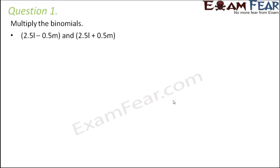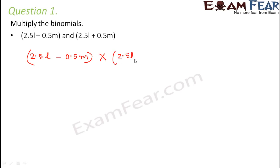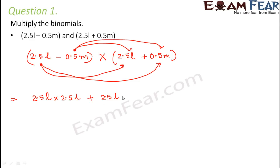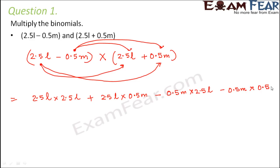Question number 1: Multiply the binomials 2.5L minus 0.5M and 2.5L plus 0.5M. So here the same concept applies — 2.5L minus 0.5M multiplied by 2.5L plus 0.5M. Each term of this expression should get multiplied to both the terms of the next expression. The second term should also get multiplied to both terms of the next expression. So we can write it as 2.5L into 2.5L plus 2.5L into 0.5M minus 0.5M into 2.5L minus 0.5M into 0.5M.